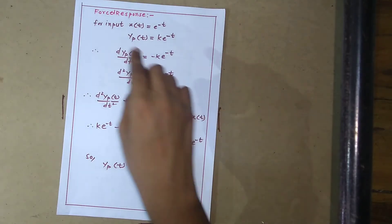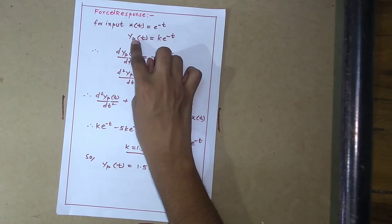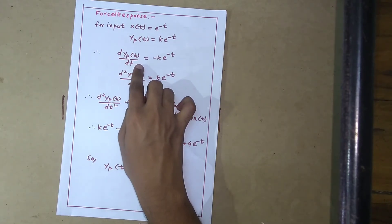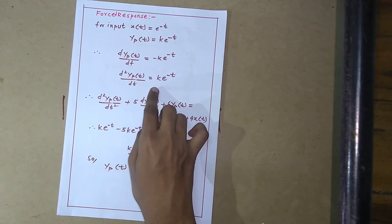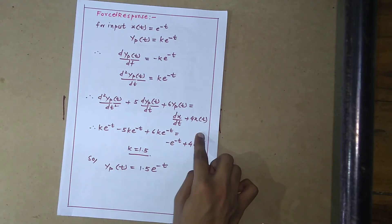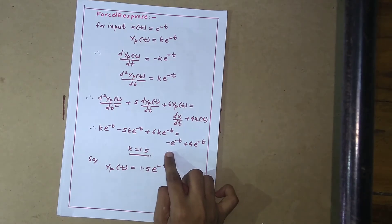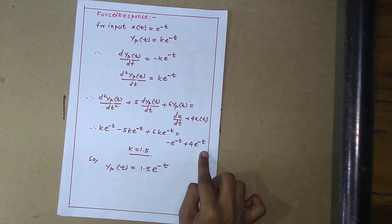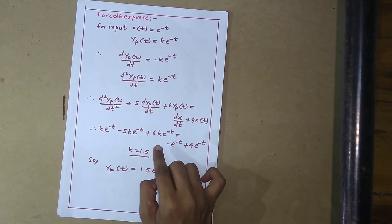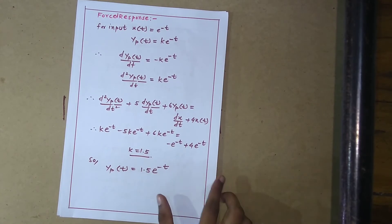We have now calculated the natural response. For the forced response, with input x(t) = e^(−t), the particular solution takes the form k·e^(−t). The first derivative is −k·e^(−t) and the second derivative is k·e^(−t). Substituting these into the equation gives k·e^(−t) − 5k·e^(−t) + 6k·e^(−t) = −e^(−t) + 4·e^(−t). Cancelling e^(−t) from both sides, we find k = 1.5, so the particular solution is 1.5·e^(−t).